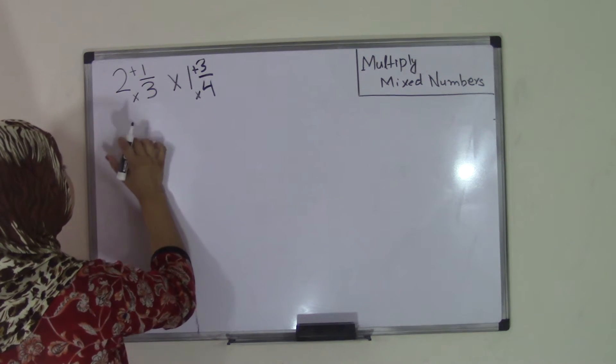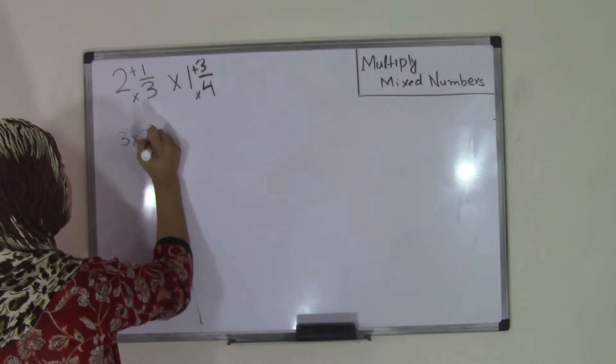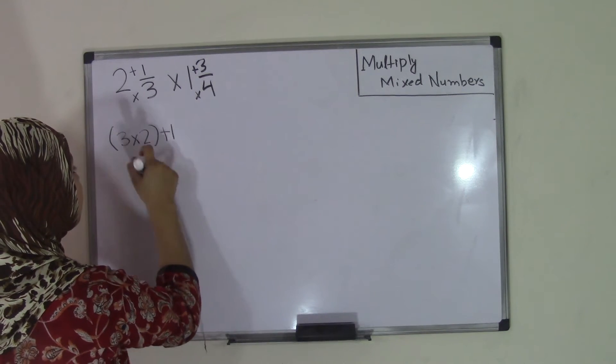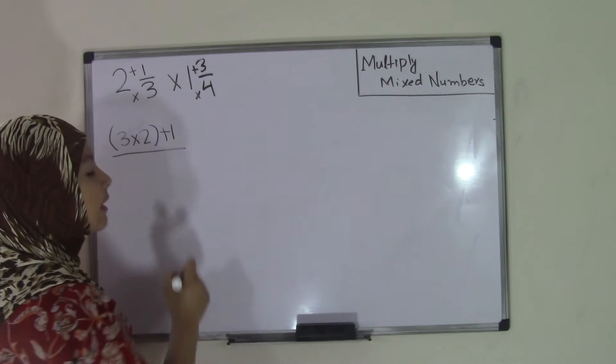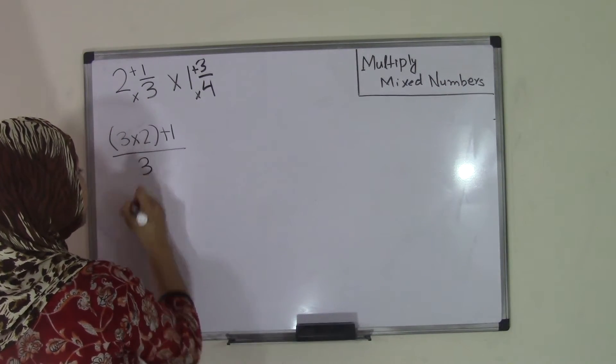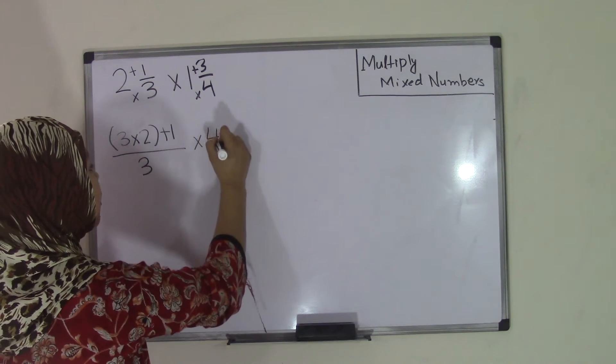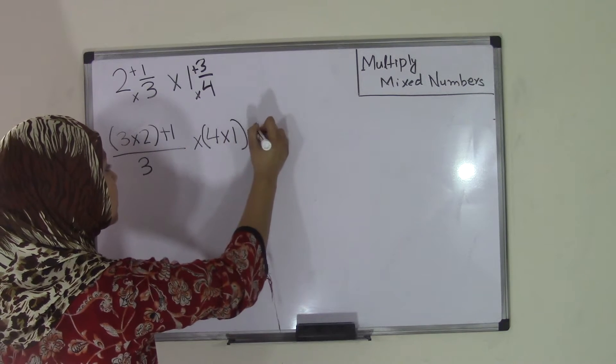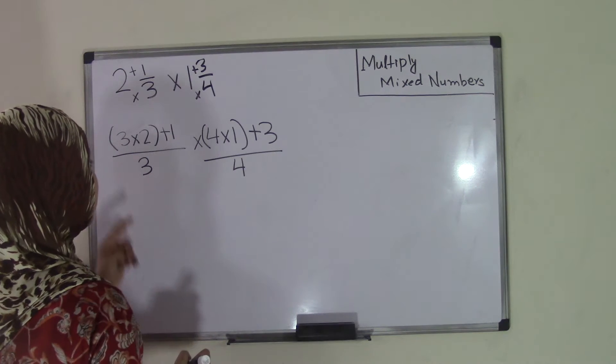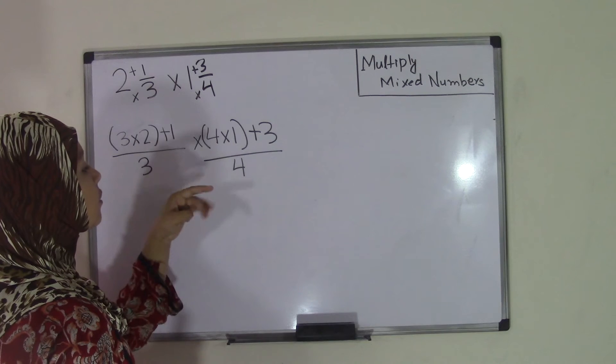So now we have, in other words, since we're doing denominator times whole number, we have 3 times 2 plus 1. So denominator times whole number plus numerator. And keep in mind that our denominator stays the same, so we will still have 3 as our denominator. Now we bring down our multiplication sign, and we do the same thing. So 4 times 1 plus 3, and our denominator stays the same, which is 4. So now we have (3 × 2 + 1)/3 times (4 × 1 + 3)/4.